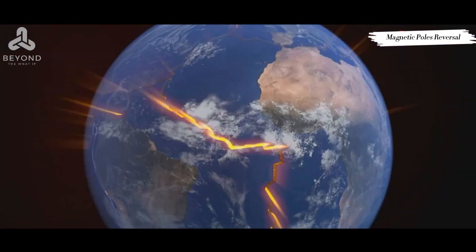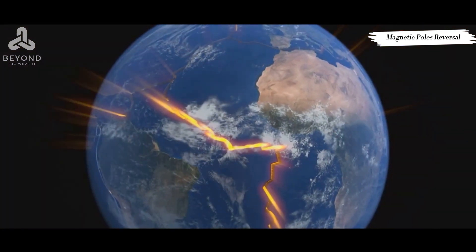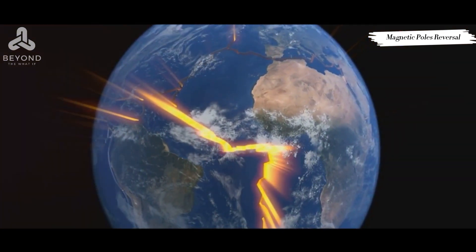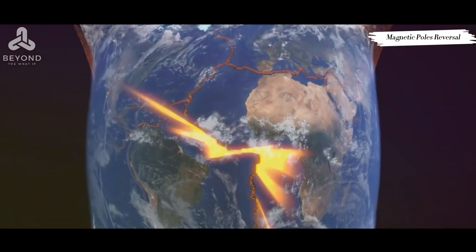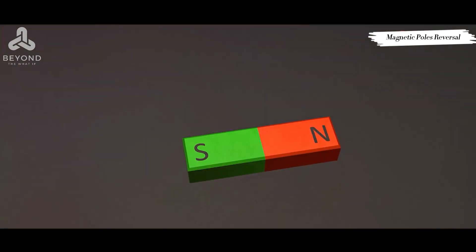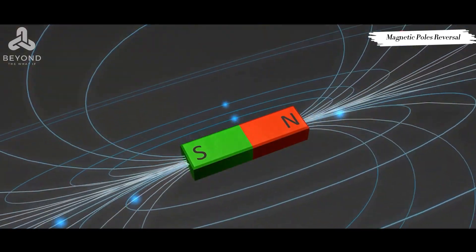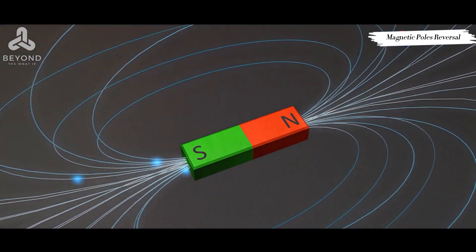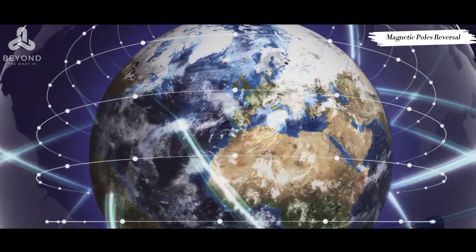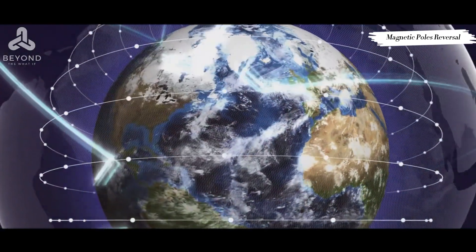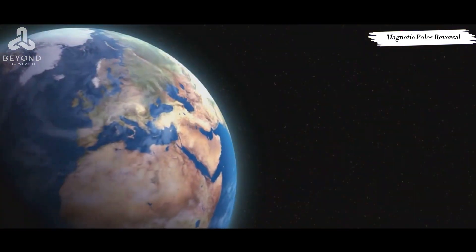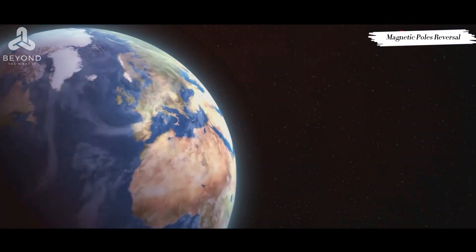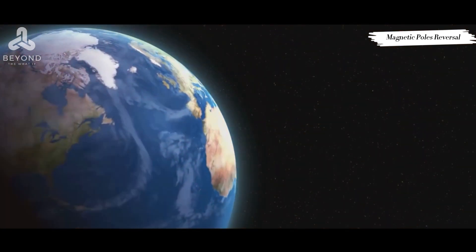But this engine isn't always steady. Sometimes the flow of molten material can fluctuate, causing changes in the generated electric currents and consequently the magnetic fields they produce. Over time, these changes can grow and evolve, eventually causing the magnetic field to flip completely — like a giant cosmic switch with the magnetic north and south poles trading places. It's an irregular process happening over vast geological timescales; in fact, the last reversal occurred approximately 780,000 years ago.